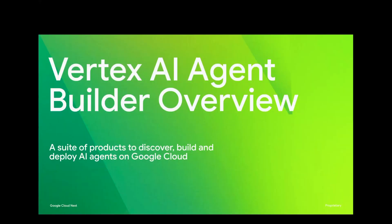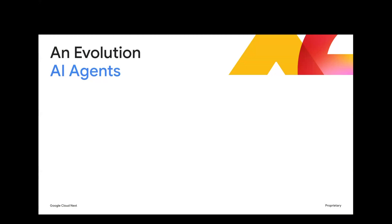I think agentic applications are really interesting these days. As a developer, if I call a model multiple times and chain them together, I can call this an agentic workflow or agentic application. But at Google, when we think about how to build a platform for agents, we need to be more precise about what an agent is. I'd like to walk you through quickly how we got here today, and then give you our definition of agents.